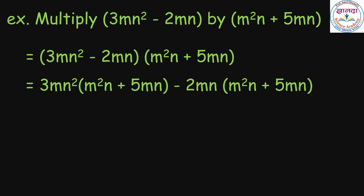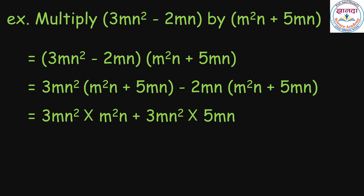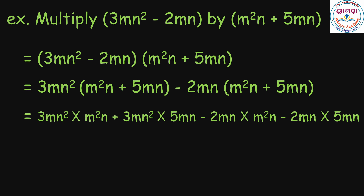Again using the distributive property, we get 3mn square multiplied by m square n, plus 3mn square multiplied by 5mn, minus 2mn multiplied by m square n, minus 2mn multiplied by 5mn.